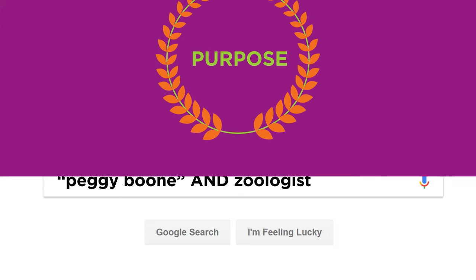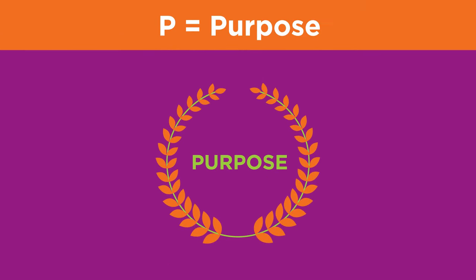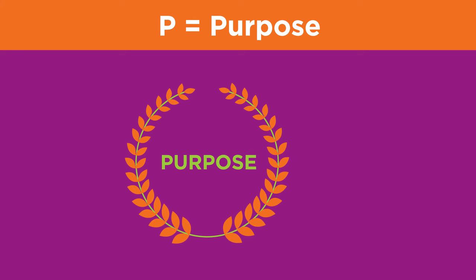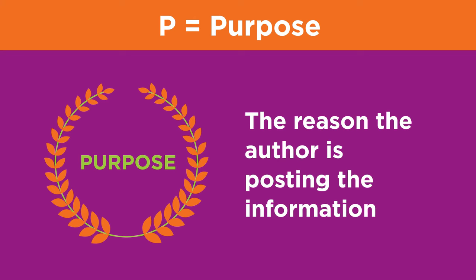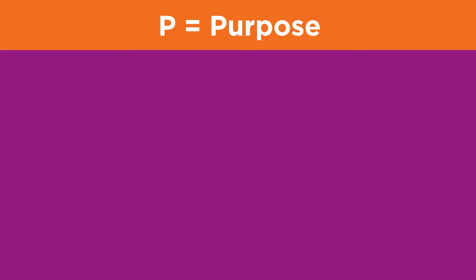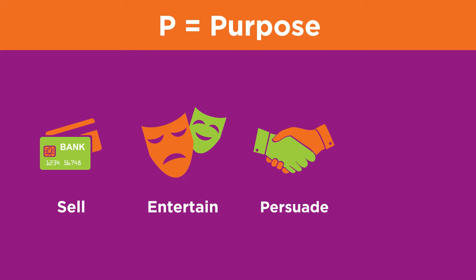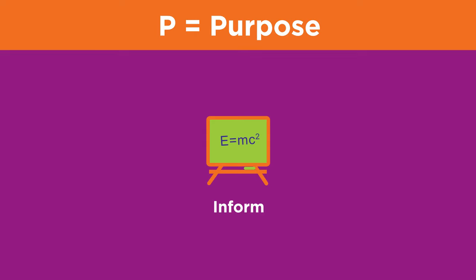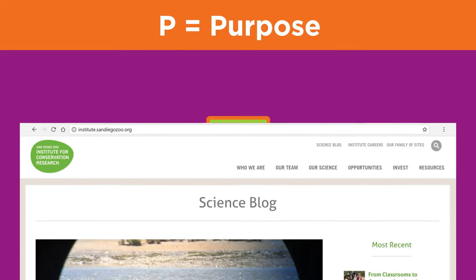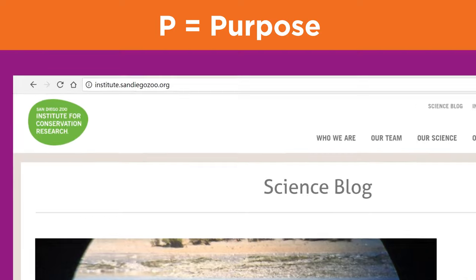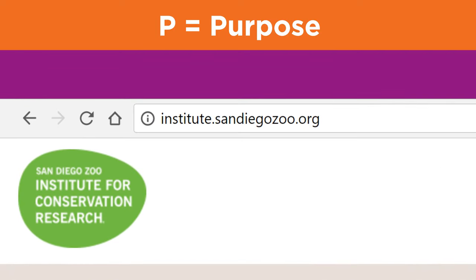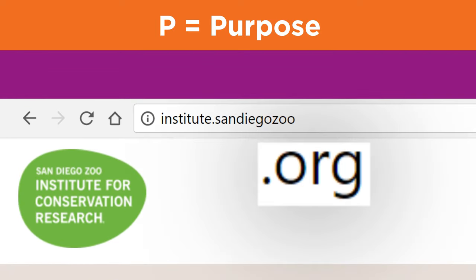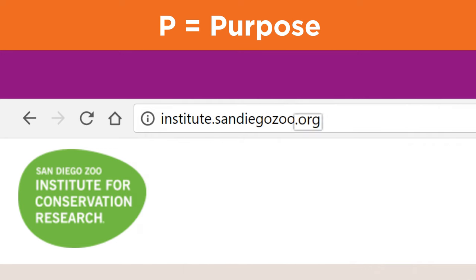The P in TRAP stands for purpose. Purpose means the reason the author is posting the information. Sites are often created to sell, entertain, persuade, or inform. The best kind of source to find for research is the site intended to inform. One way to detect the purpose of a site is to look at the end of the URL or web address. The last three letters of the URL determine the site's domain. Examples are .org, .edu, .com, and .gov.